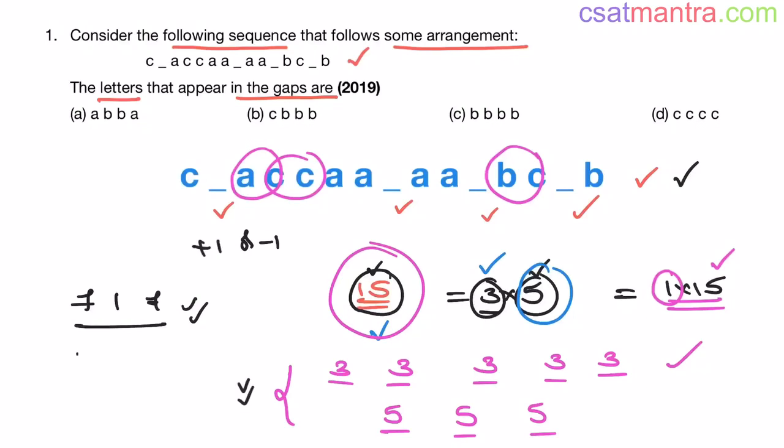So if you have 16 letters, you can write it as 2 into 8 or 4 into 4. So set of 2 letters, 8 such sets, or set of 8 letters, 2 such sets. Otherwise set of 4 letters, 4 such sets. These are the possibilities you have when 16 letters are present. So all you have to do is write it in terms of factors.